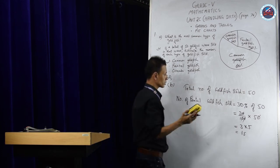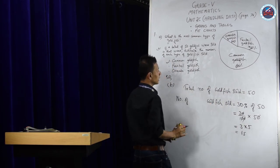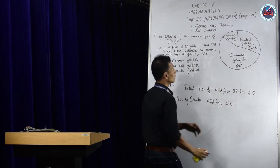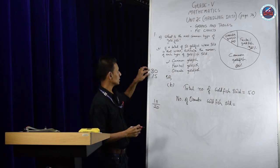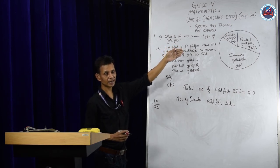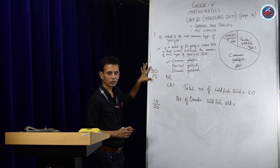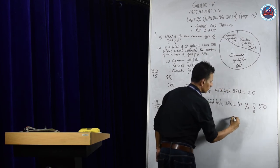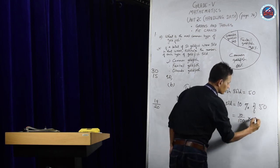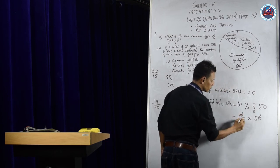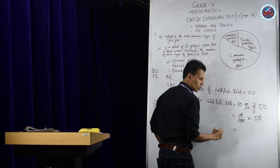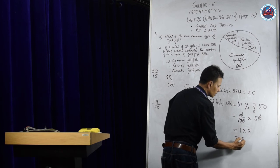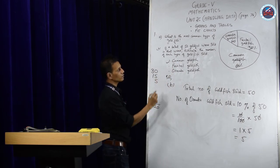Now for oranda goldfish: 10% of 50. Write 10 over 100, multiply by 50. Cancel zeros: numerator becomes 1, denominator becomes 1, leaving 1 times 5. That equals 5. So 5 oranda goldfish were sold — the least, which matches the smallest part of the pie chart.